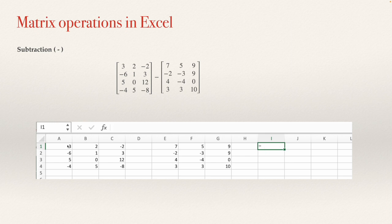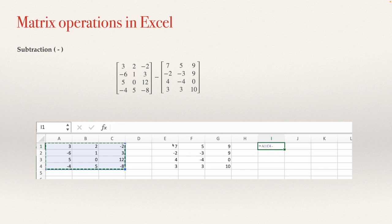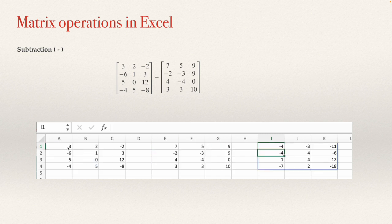Another way is selecting A1:C4. Don't forget there will be a colon between the two cells. Then type the minus sign for the subtraction, and select the second matrix: E1:G4. After you have this, press Enter. The result matrix will appear from that cell. You can check: 3 minus 7 equals negative 4, negative 10 minus 8 equals negative 18. That's how we make subtraction of matrices in Excel.